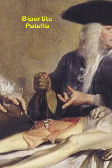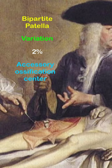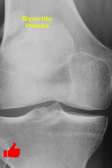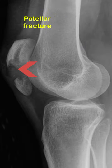This is a normal variant present in approximately 2% of the population, and it represents the presence of an accessory ossification center that remains unfused. A bipartite patella is discovered incidentally in asymptomatic individuals and occurs sometimes bilaterally. The important thing to keep in mind is not to confuse it with a fracture of the patella on a radiograph.